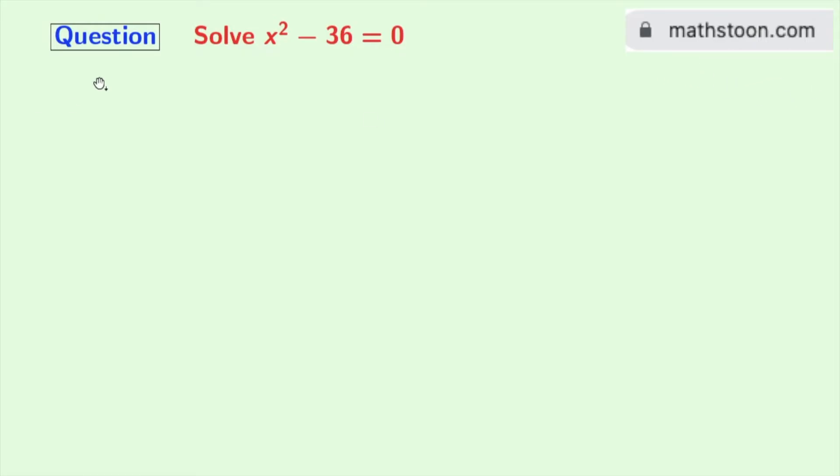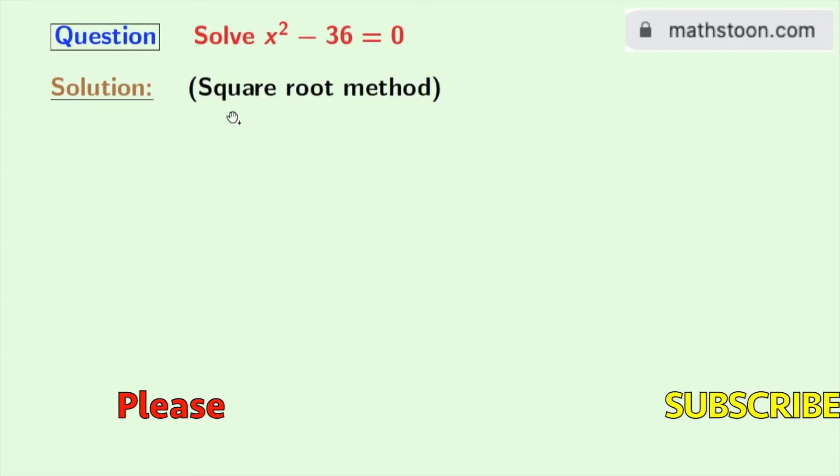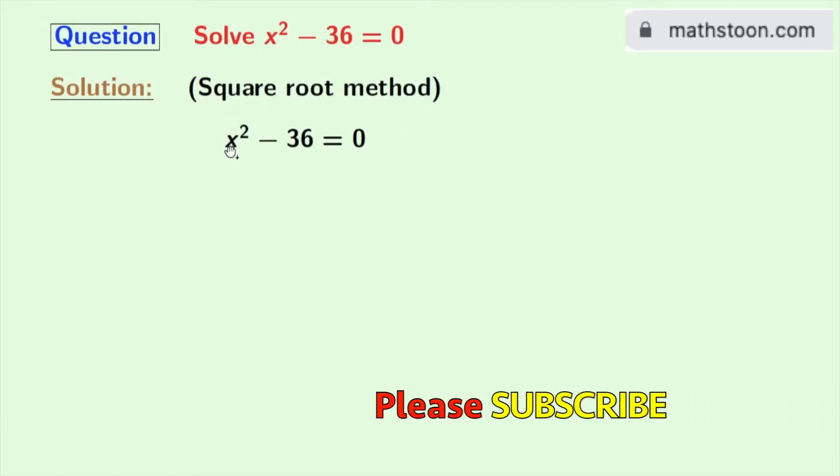Now let's start. We will solve this equation using two methods. The first method we will apply is square root method. Our given equation is x square minus 36 is equal to 0. Now we will write this expression as x square is equal to 36.